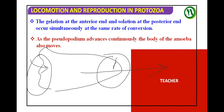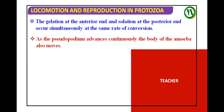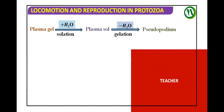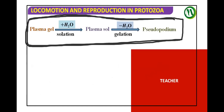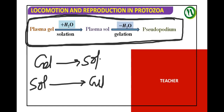The gelation at the anterior end and solation at the posterior end occur simultaneously at the same rate of conversion. As the pseudopodium advances continuously, the body of the amoeba also moves forward. Sol-gel conversion is responsible for the pseudopodium forming and the organism moving forward — it is very slow locomotion.